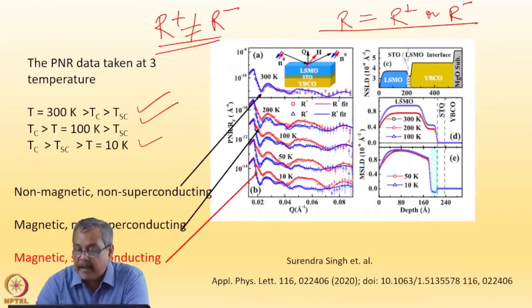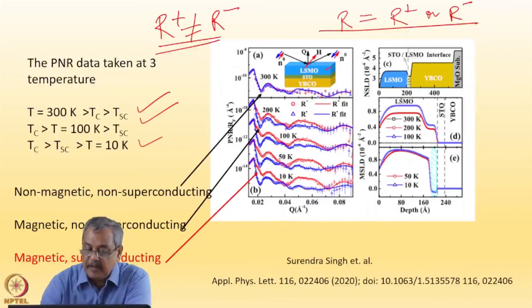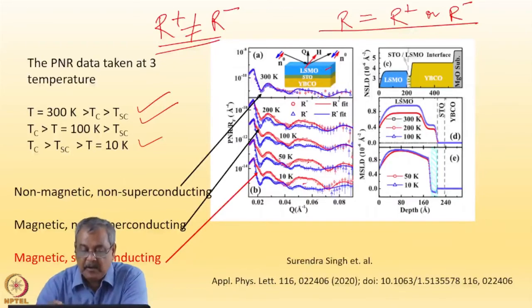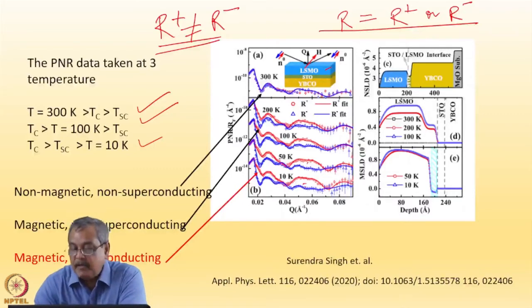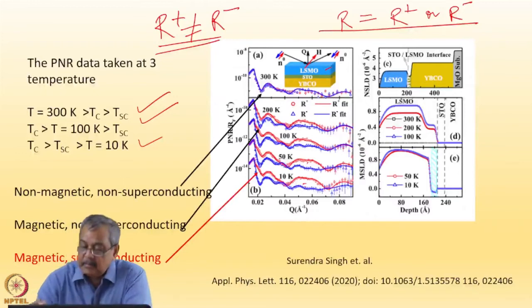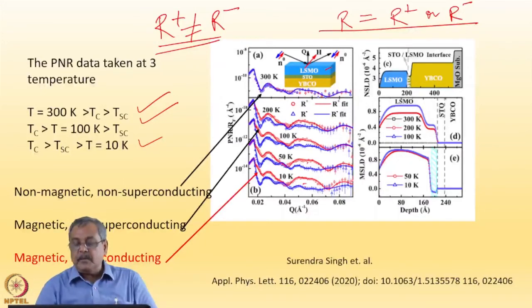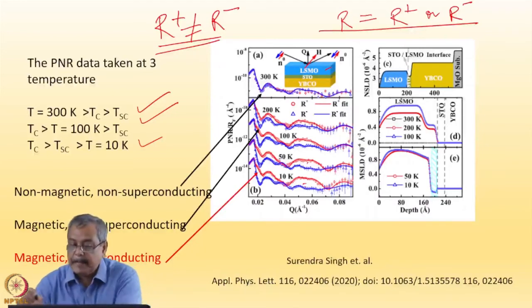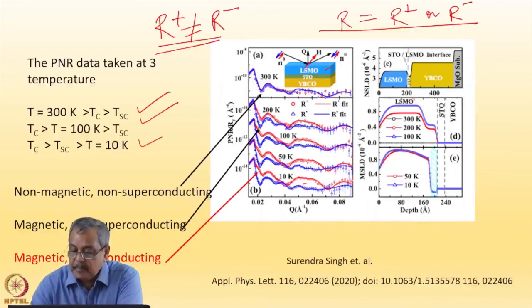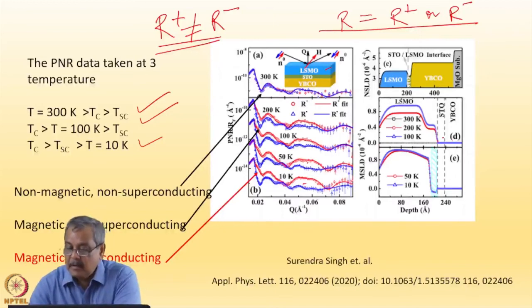Now here I will get the magnetic moment density profile in the LSMO layer. This is non-magnetic. Insulator layer is also non-magnetic. The only magnetic layer is the LSMO layer. Interestingly, at 300 K, whatever we had, at 100 K, we have got the magnetic moment density profile as given. At 300 K, black means we had no magnetization.